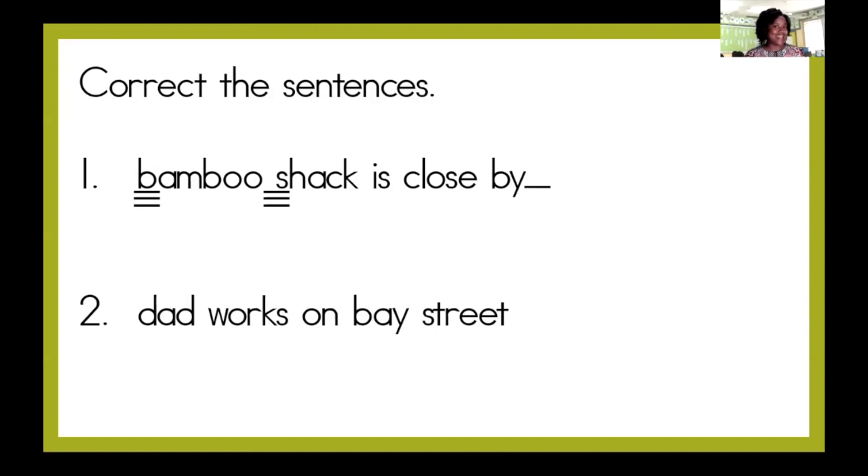Have you figured it out? What type of sentence is it? Because if we know what type of sentence it is, we know just which end mark to use. Let's read the sentence again. Bamboo shack is close by. That's a statement. You're right. It's a telling sentence and statements get a full stop or period at the end. So this sentence looks like this. Bamboo Shack is close by.